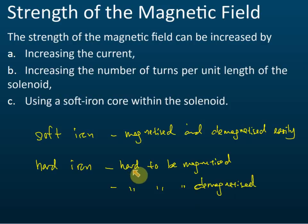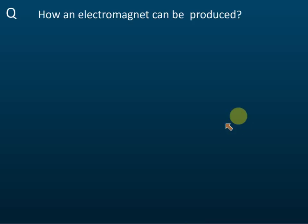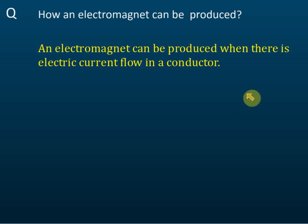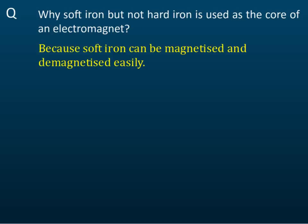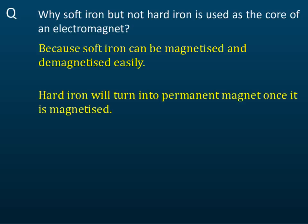An electromagnet can be produced when there is electric current flowing in the conductor. Why is soft iron and not hard iron used as the core of an electromagnet? Because soft iron can be magnetized and demagnetized easily, whereas hard iron will turn into a permanent magnet once it is magnetized - and that's why we use soft iron, not hard iron, as the core of an electromagnet.